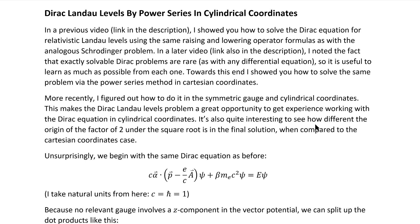In a previous video, link in the description, I showed you how to solve the Dirac equation for relativistic Landau levels using the same raising and lowering operator formulas as with the analogous Schrodinger problem. In a later video, link also in the description, I noted the fact that exactly solvable Dirac problems are rare, as with any partial differential equation, especially in physics, so it's useful to learn as much as you can from each one that you do have. Towards this end, I showed you how to solve the same problem via the Power Series method in Cartesian coordinates.